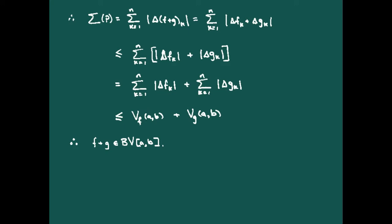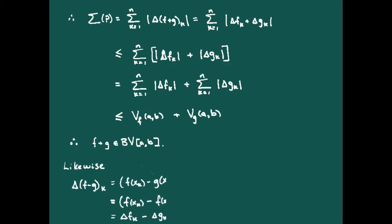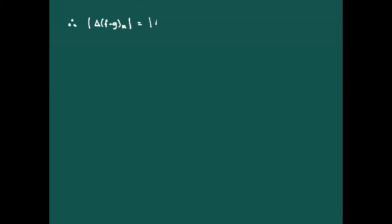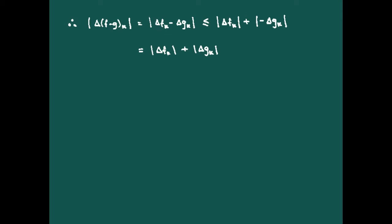Essentially the same steps work for the difference of the two functions. The variation is again bounded above by the total variation of f plus the total variation of g, giving us that the difference of the two functions is also of bounded variation.